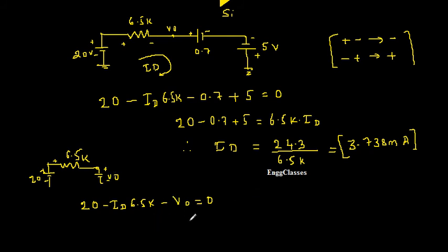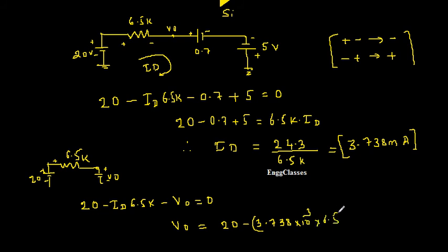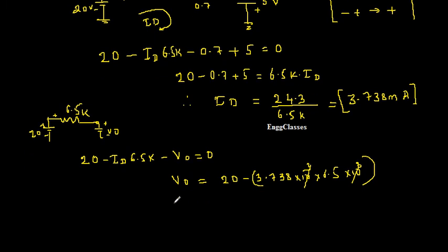Therefore V0 equals 20 minus ID into 6.5 kilo ohm. Substituting ID as 3.738 times 10 to the power minus 3 amps multiplied by 6.5 times 10 to the power 3 ohms, the powers of 10 cancel. So V0 equals 20 minus 24.3, which gives V0 equal to minus 4.3 volt.